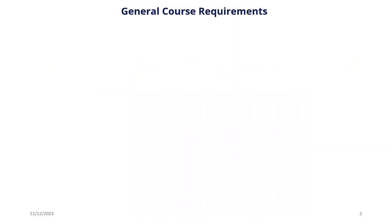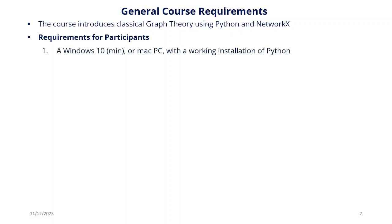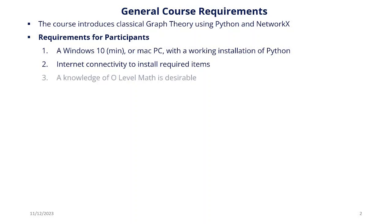General Course Requirements. The course will introduce classical graph theory using Python and NetworkX. Participants should have a Windows computer or a Mac PC — Windows 10 minimum, preferably — with a working installation of Python. Internet connectivity is sometimes required as we will be installing some items along the way. A knowledge of ordinary level mathematics is generally desirable to understand graph theory.